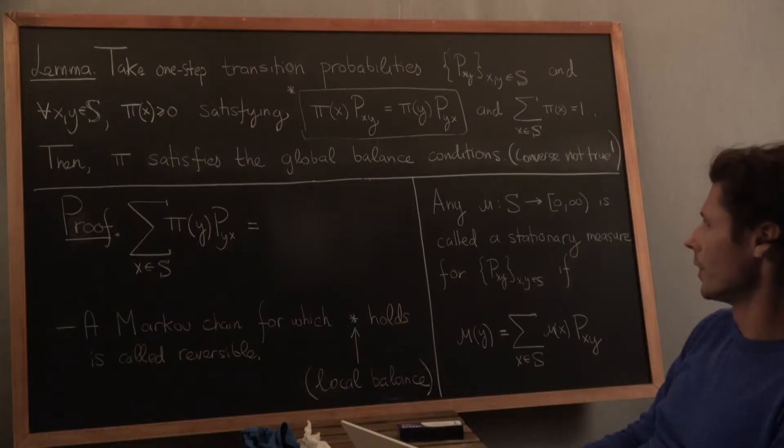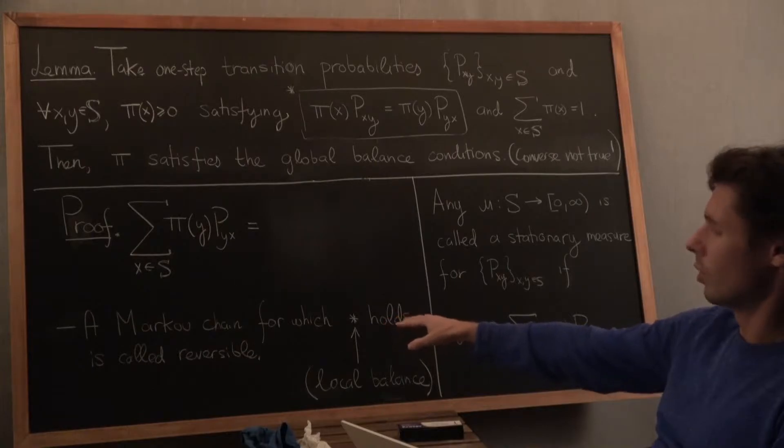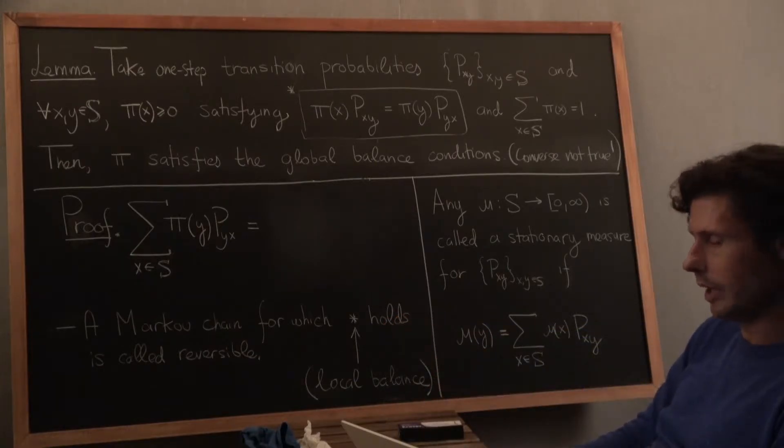So before moving to the proof, I want to say that this local balance definition relates to something called reversibility. A Markov chain for which star, namely local balance holds, is called reversible. And this plays a big role in the theory of physics. That's where all this stuff is coming from. And it has to do with sort of reversible and irreversible processes.